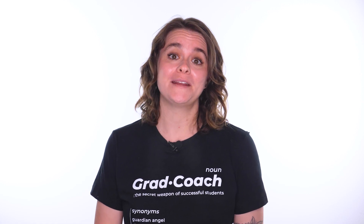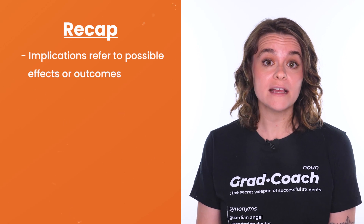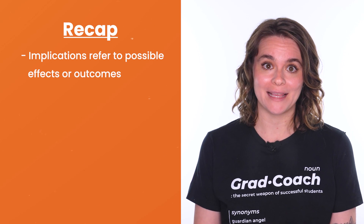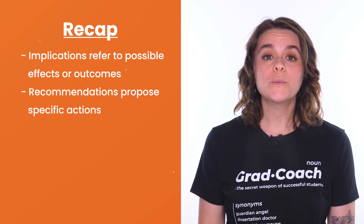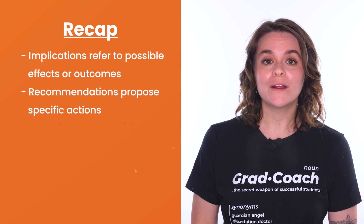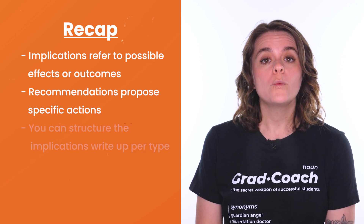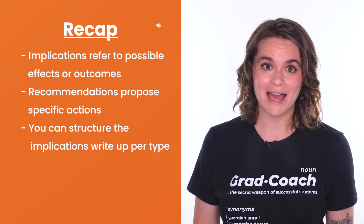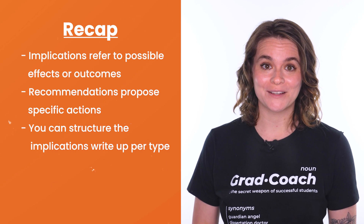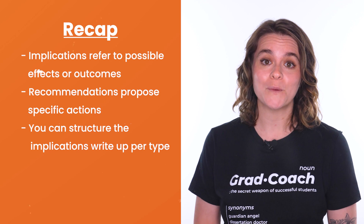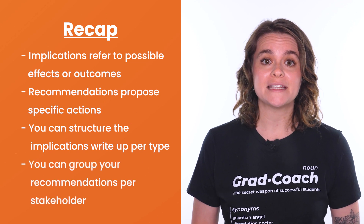We've covered quite a bit of ground, so let's quickly recap. Research implications refer to the possible effects or outcomes of a study's findings — they answer the question, what do these findings mean? The recommendations section is where you'll propose specific actions based on your study's findings, answering the question, what should be done next? When writing up, you can structure your implications section based on three categories: theoretical, practical, and future research implications. You can carry this structure through to the recommendations as well, or group your recommendations by stakeholder.